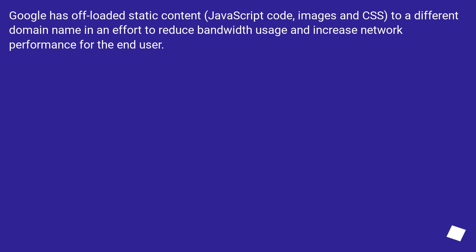Google has offloaded static content — JavaScript code, images, and CSS — to a different domain name in an effort to reduce bandwidth usage and increase network performance for the end user.